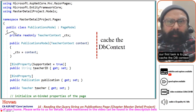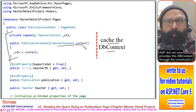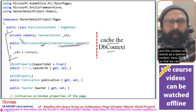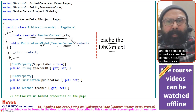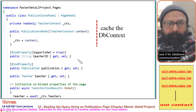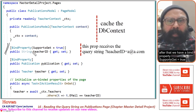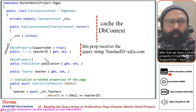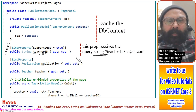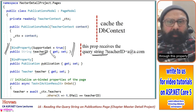Our first task is to cache the DB context. ASP.NET Core provides this DB context through the constructor, and the context is stored as a TeacherContext so we can use it for database communication. After that, we have a BindProperty with SupportsGet equal to true — the TeacherId property — which will be used to store the query string data and make it available to our class.